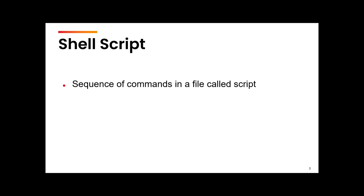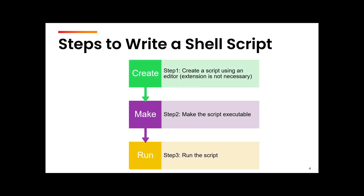A shell script is nothing but a sequence of commands written in a file. The steps to write a shell script are: first, make a file — giving an extension to the file is optional. Then write the code, save it, and make the script executable. This is an important point — you need to make the script executable. Finally, run that script and the output will be displayed on the screen, or wherever you want to redirect it.